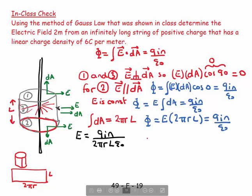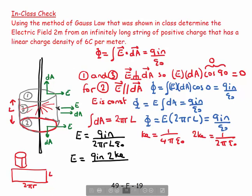E is equal to Q inside over 2πrL epsilon naught. Now, at this stage, we usually do something with ke. ke is equal to 1 over 4π epsilon naught. We only have 2π epsilon naught. That's okay. 2ke is equal to 1 over 2π epsilon naught. Still works. So, I can say that E is equal to Q inside 2ke over, that cancels with that and that cancels with that over rL.